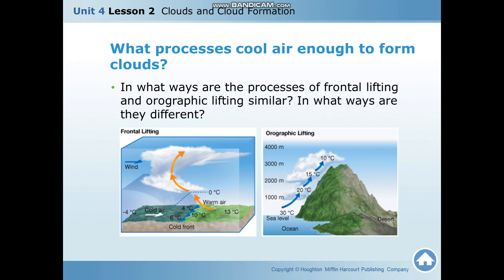In orographic lifting, as you can see, there are arrows going up — from lower elevation going upward, that's why it's called orographic lifting. There is a rise of air from the lower to the higher elevation. Looking at the temperature starting from 30 degrees Celsius going up, it becomes cooler. So warm air rises, and when it goes up, it becomes cooler.